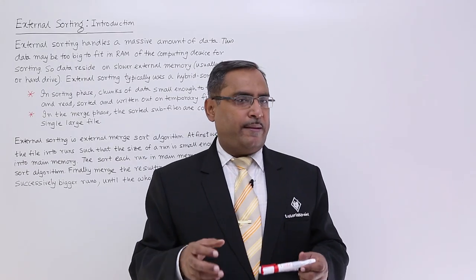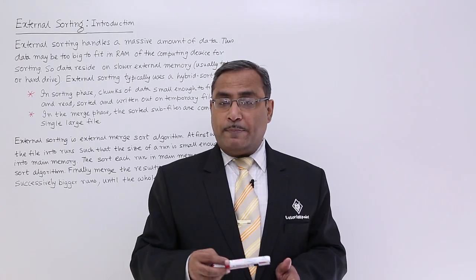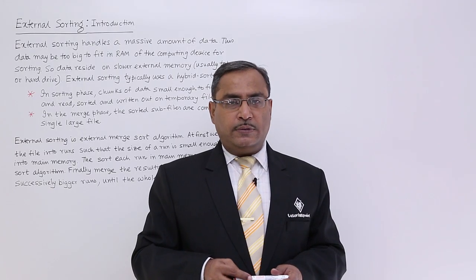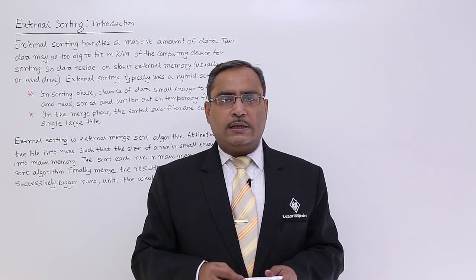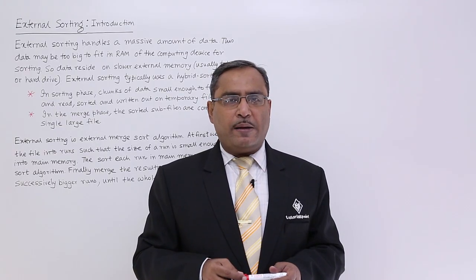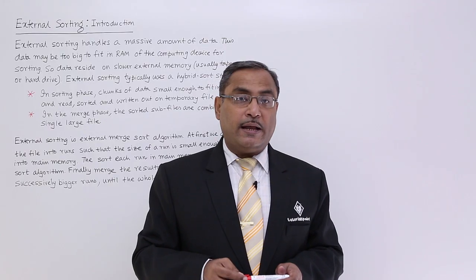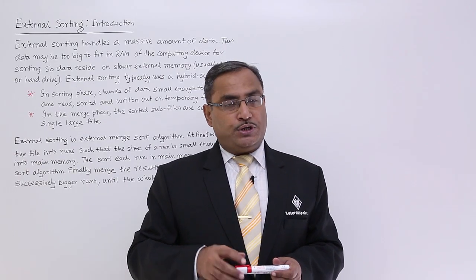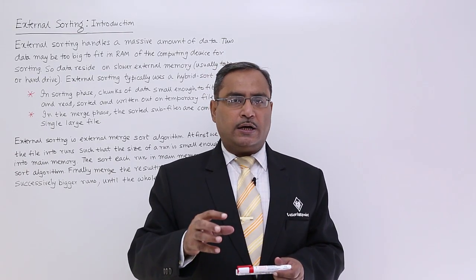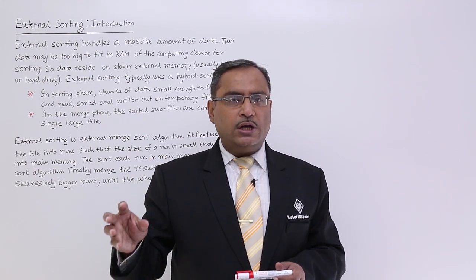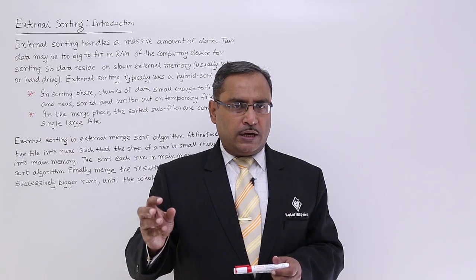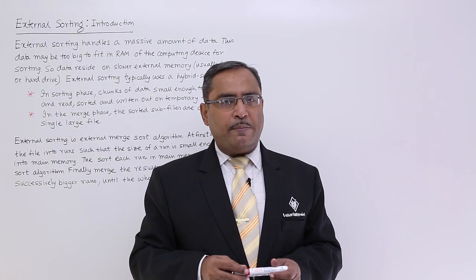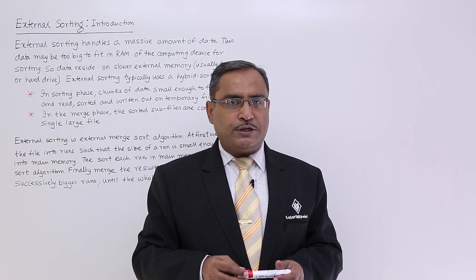Memory means here the RAM. But in case of external sorting, what happens is the data item, the volume of the data is too big, too enormous, cannot be kept in the computer's primary memory or RAM at the same time. That is why we shall keep some part of the data onto the secondary storage, the slow running secondary storage, and some part of the data will be put into the computer's primary memory which is fastest in operation.